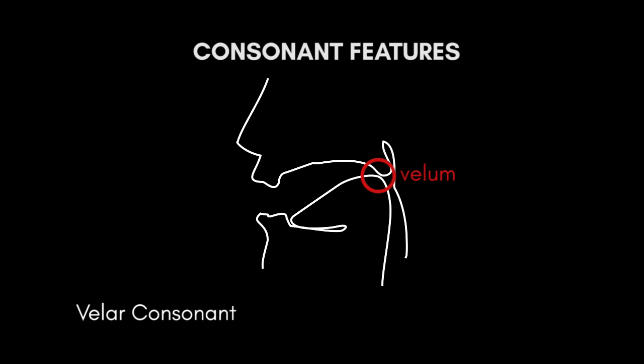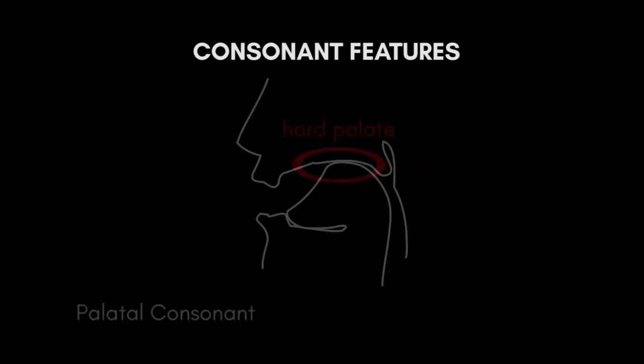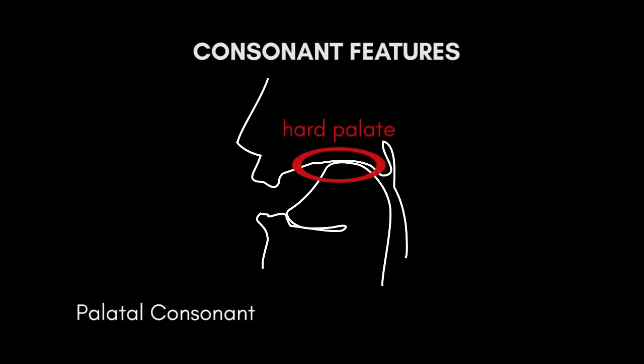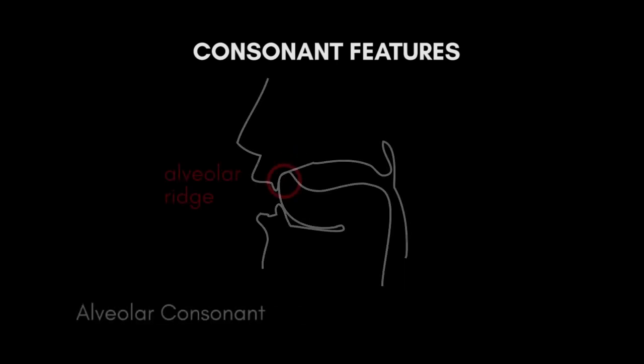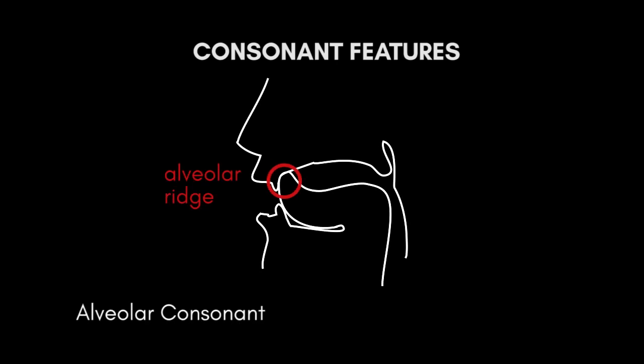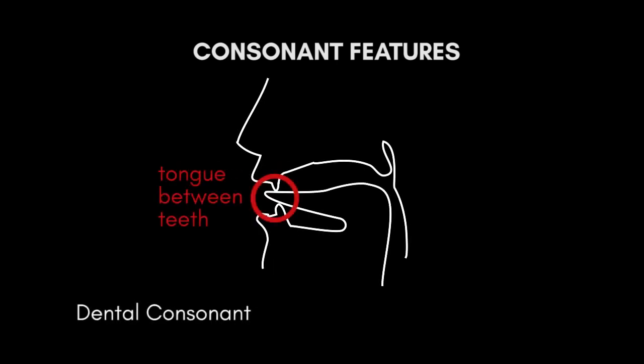Examples of velar consonants include [k] and [g]. Palatal consonants happen when you raise the tongue to the hard palate, or the roof of your mouth. An example of a palatal consonant is [j]. Post-alveolar or alveopalatal consonants occur when you raise your tongue to the alveolar ridge to block or constrict air flow.